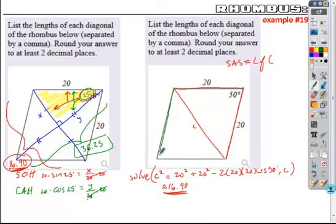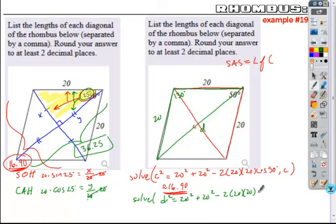And I can do the same thing to find my other diagonal. If I know that consecutive angles in the rhombus are supplementary, that would mean this whole angle is the supplement of 50 or 130. And so I'll call this D here. I still have side lengths of 20. So I can use D squared is equal to 20 squared plus 20 squared minus 2 times 20 times 20 times the cosine of this angle is 130.